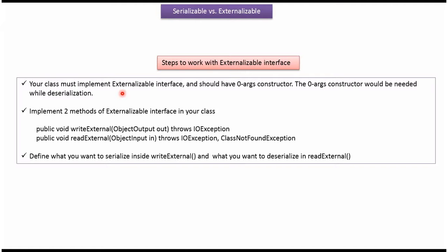Here are the steps to work with Externalizable interface. Your class must implement Externalizable interface and should have a zero-argument constructor. The zero-argument constructor would be needed while deserialization. Your class should override writeExternal and readExternal methods and provide implementation. Define what you want to serialize inside writeExternal method and what you want to deserialize in readExternal method.